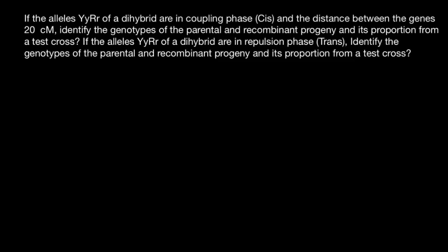Hello and welcome to Nikolai's genetics lessons. Today's question is: if the alleles of the following dihybrid cross genotype are in coupling phase (cis form) and the distance between the genes is 20 centimorgans, identify the genotypes of the parental and recombinant progeny and their proportion from a test cross. If the alleles are in repulsion phase (trans), identify the same.